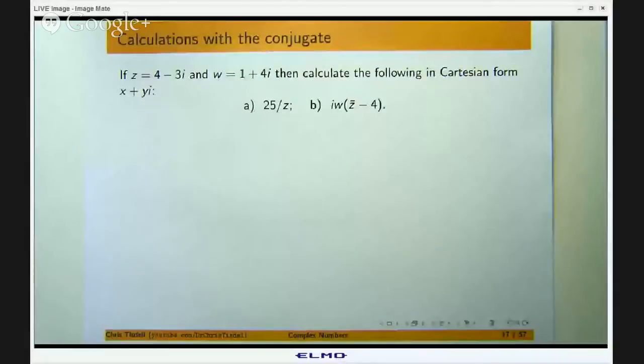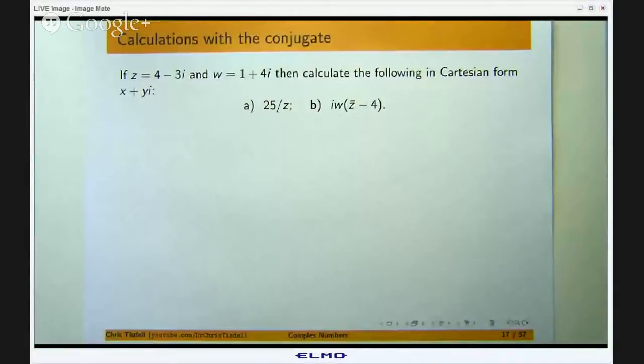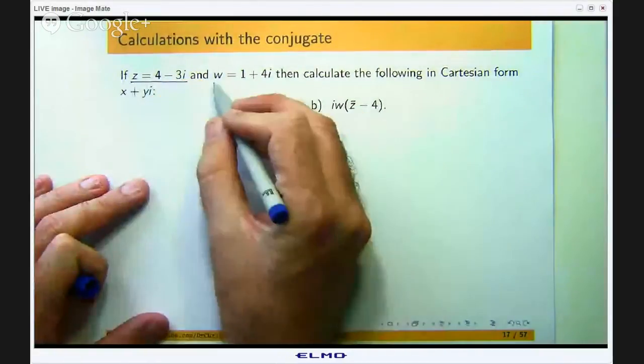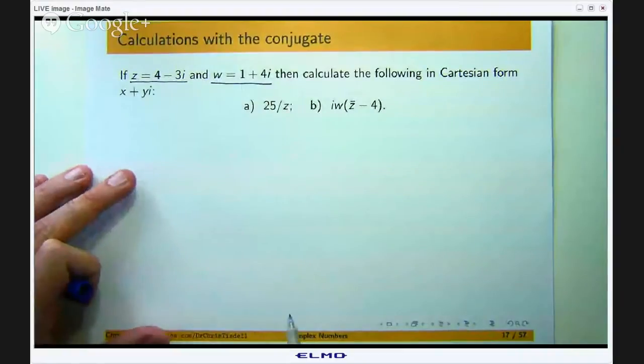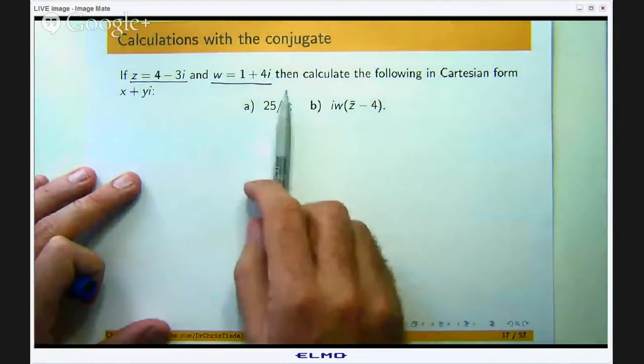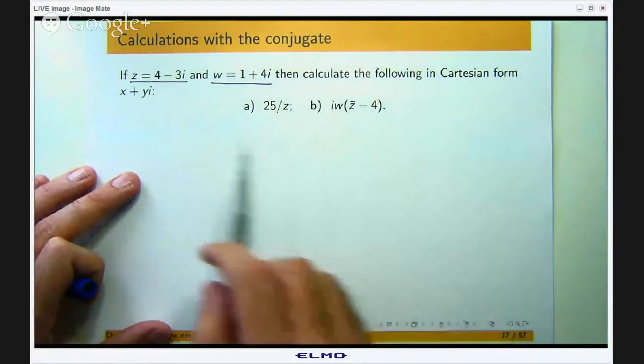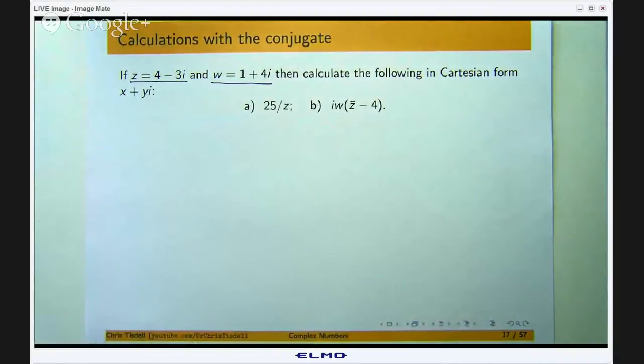Okay so let me share my screen with you and we can get started. So this is the example I am going to look at. I have got two complex numbers Z and W and we are asked to calculate or simplify the following and put them in the Cartesian form x plus yi.